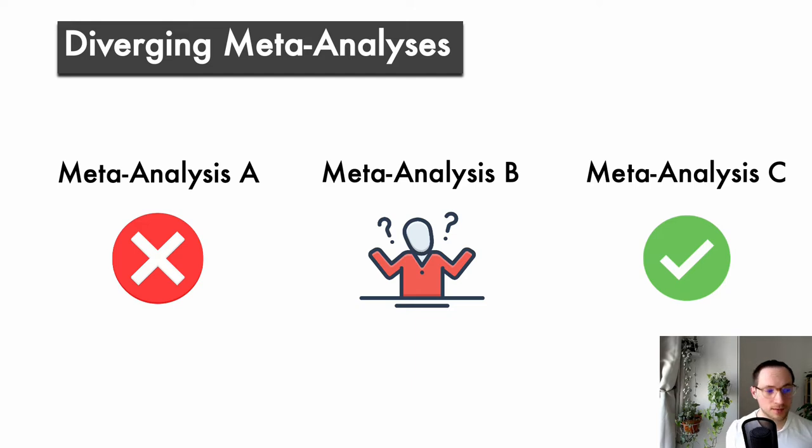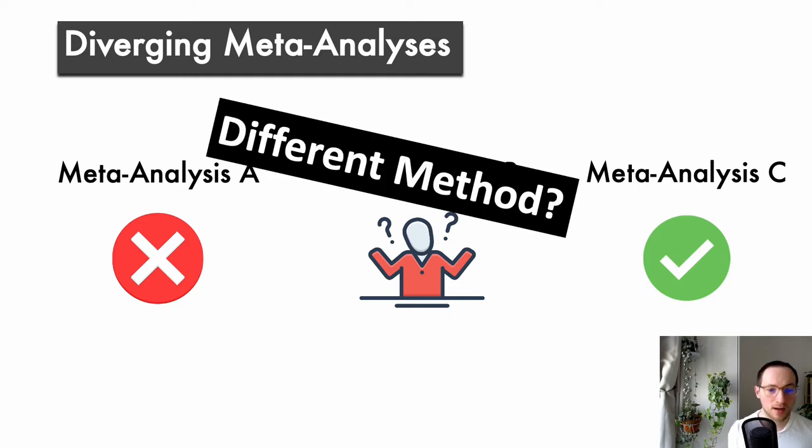Imagine a scenario where there are multiple meta-analyses on the same research question, but with diverging results. We have meta-analysis A that actually does not find an effect on the research question of interest, meta-analysis B is inconclusive, and meta-analysis C actually finds an effect. So you might suspect different reasons for these diverging results. For example, the individual meta-analyses might have used different methods - fixed effect, random effects, multi-level modeling. So this might be the reason for those diverging results.